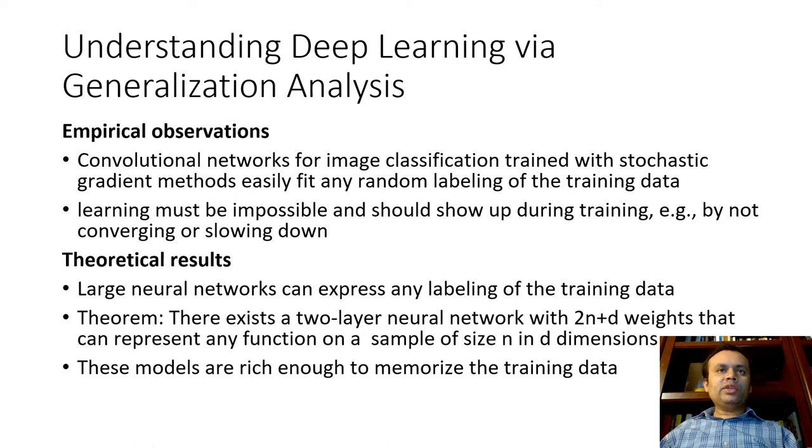Before talking about individual techniques, we would like to highlight an interesting resource from a now classical paper by Zhang et al. from 2017. What they observed was that given a CNN and the task of image classification using stochastic gradient methods, it is possible to label or to fit any random labellings of data.